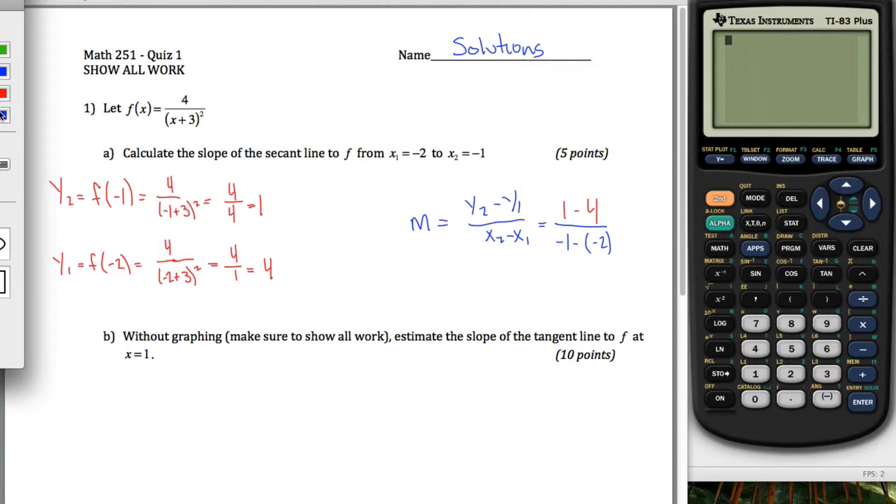Which I put into my formula over here and I simplify and get that this is equal to negative 3 because 1 minus 4 is negative 3 and negative 1 plus 2 is just 1 and negative 3 over 1 is just negative 3. And what I've done is I've calculated the slope of the secant line.